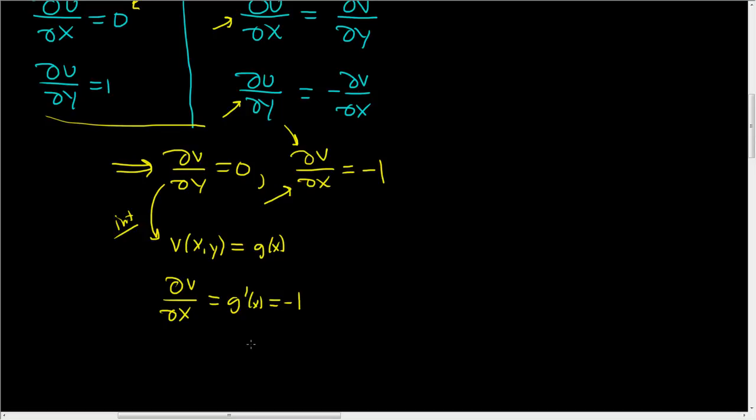And if we integrate this, we get that g(x) is equal to negative x plus a constant.